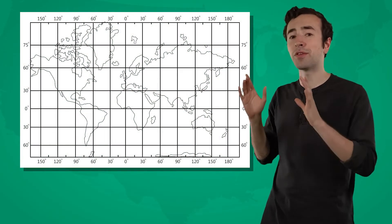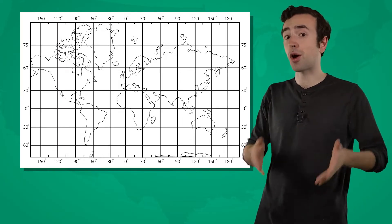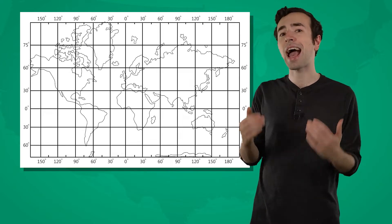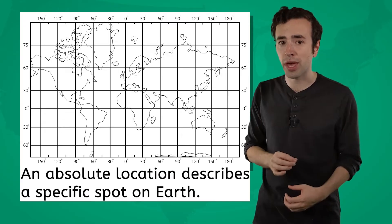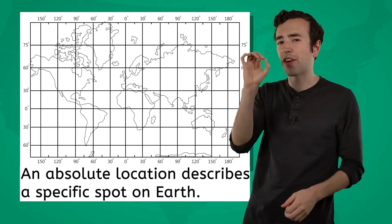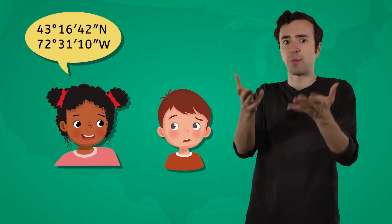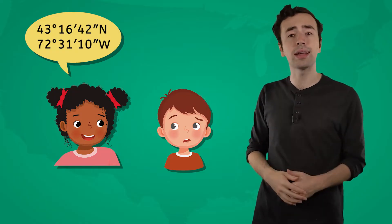Let's backtrack to what we've learned so far about maps and locations. Remember these? These are lines of latitude and longitude. These lines are important for being able to pinpoint precise locations on Earth. We call this an absolute location. An absolute location describes a specific spot on Earth. But most people don't use lines of latitude and longitude in their daily lives — most people would have no idea what you were talking about if you suddenly started spinning out coordinates at them. Instead, we use things like street names and addresses. These are also absolute locations.